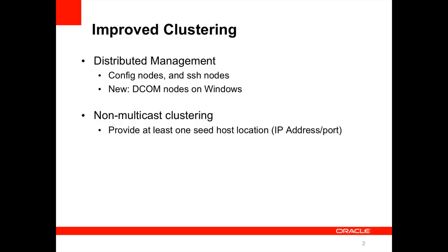We've also added support for non-multicast clustering. In some environments, multicast is disabled — this includes IT departments that might consider multicast a security risk, or in public clouds. We've added support for non-multicast clustering, where you specify the IP address and port of one of the hosts of a cluster, and the other instances then know where to go to find other instances, so it essentially becomes the directory. Multicast in GlassFish is only used to monitor cluster status — which instances have joined or left the cluster intentionally or failed — and now that responsibility is managed through host-to-host communications versus multicast.